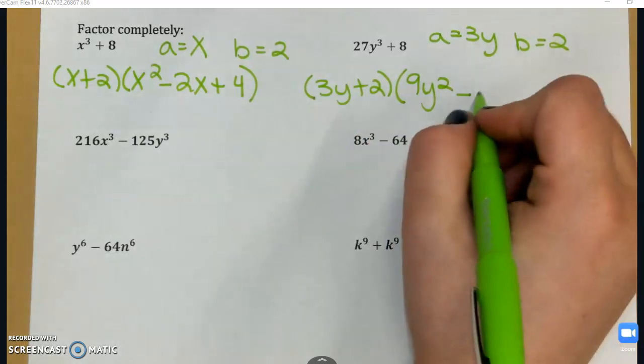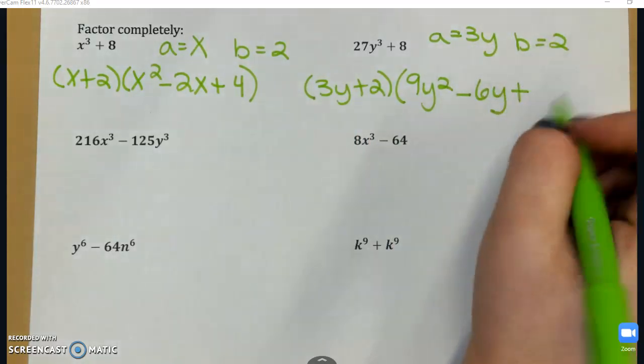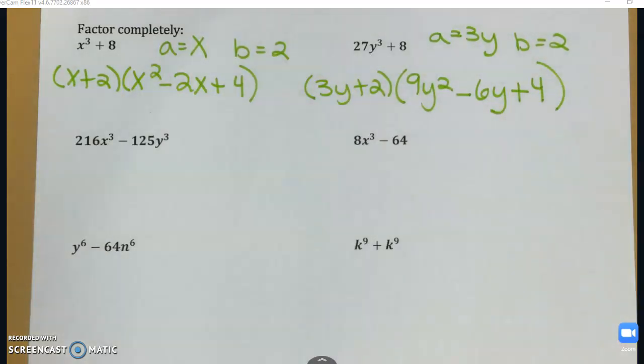Minus a times b is going to give me 6y, plus, again, 2² is 4. Then look at both of your parentheses, see if there's anything else you can factor further. And on this particular one, there is not.